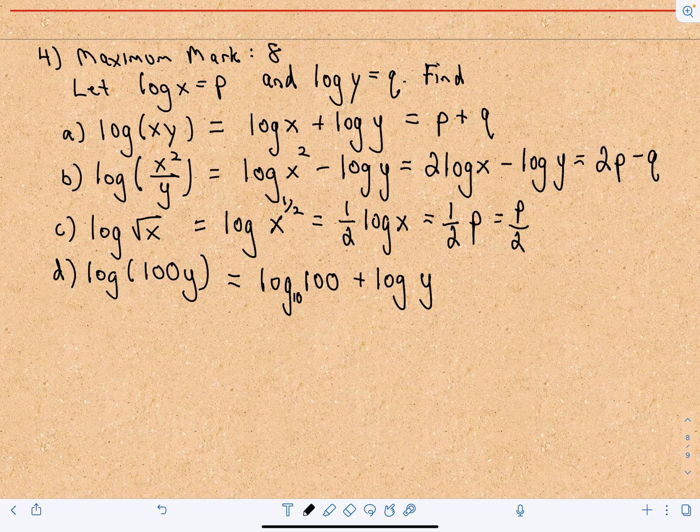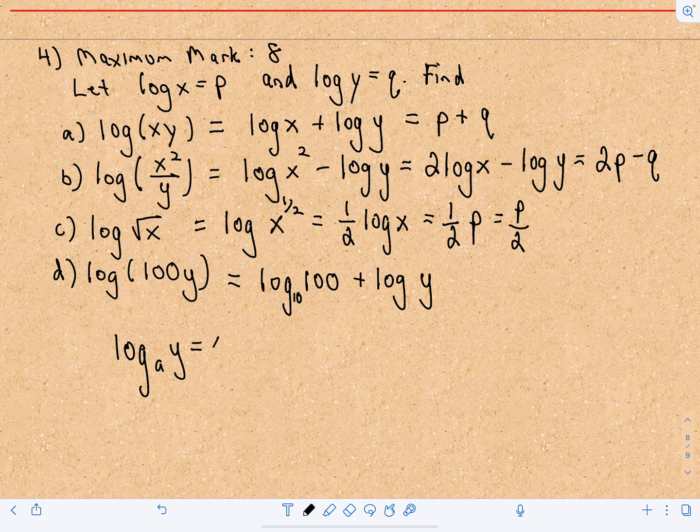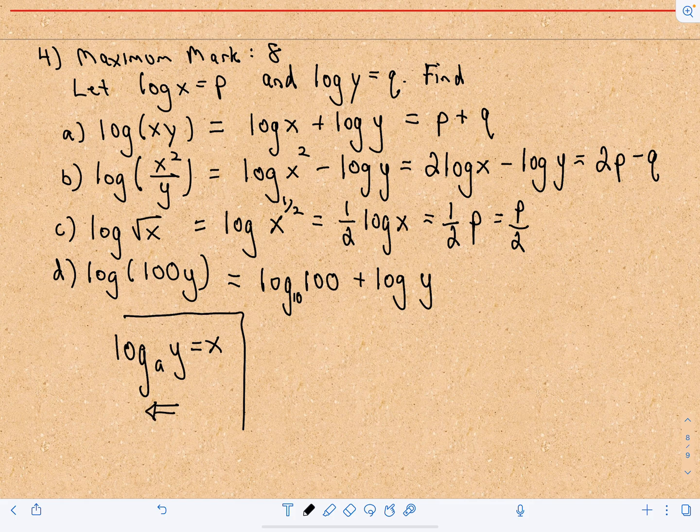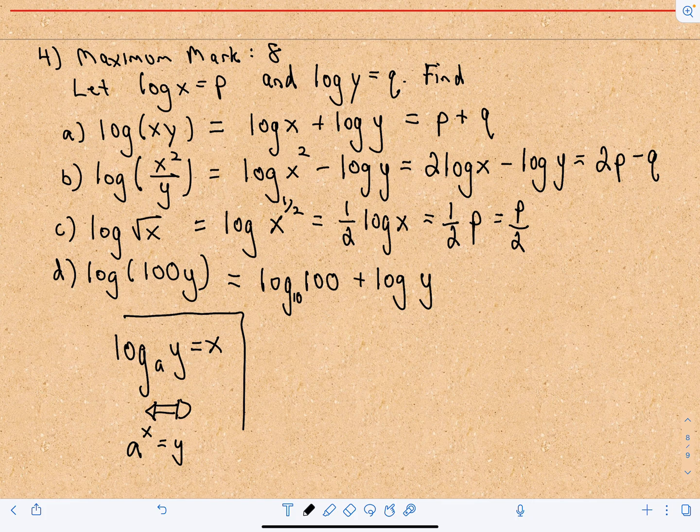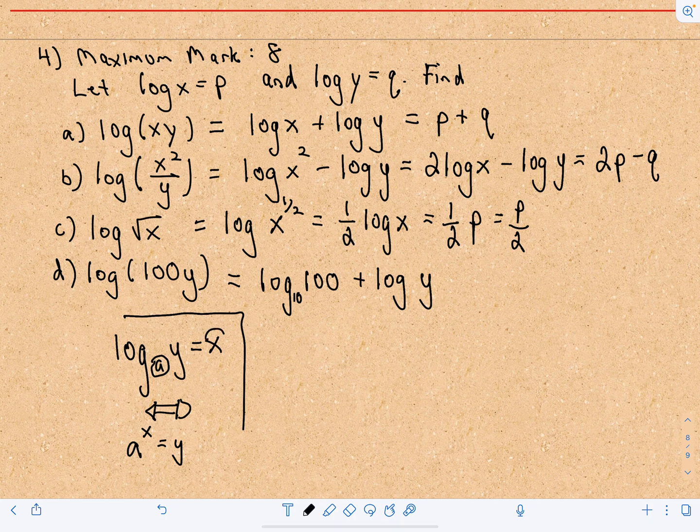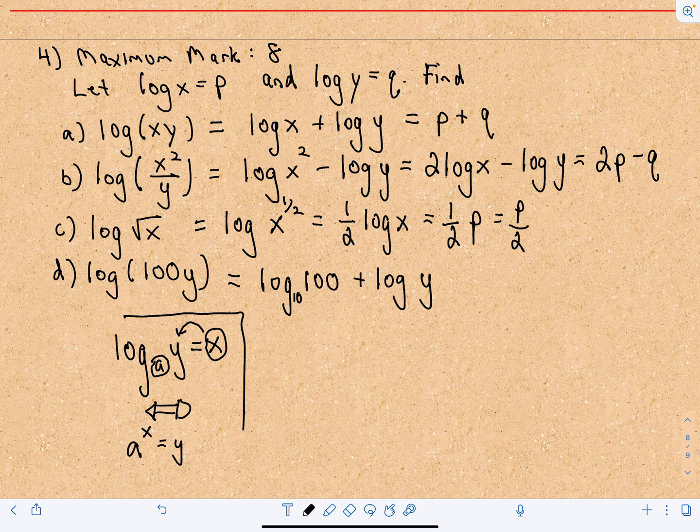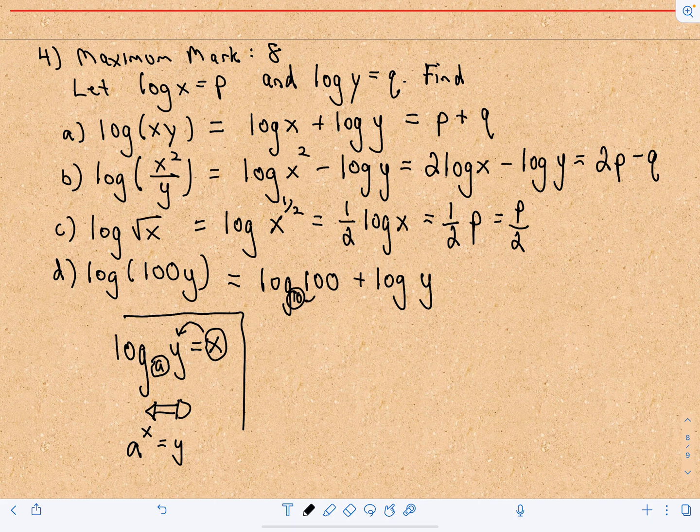So one last little thing here. If we have log base A of Y equals X, we can turn this into an exponent by writing A to the X equals Y. So really to simplify this logarithm, log base A of Y, I'm thinking A raised to what power gives me Y? A raised to what power gives me Y? Well 10 raised to, so I'm thinking 10 raised to what power is going to give me 100?